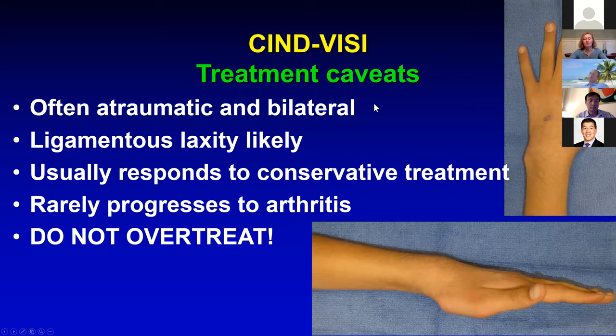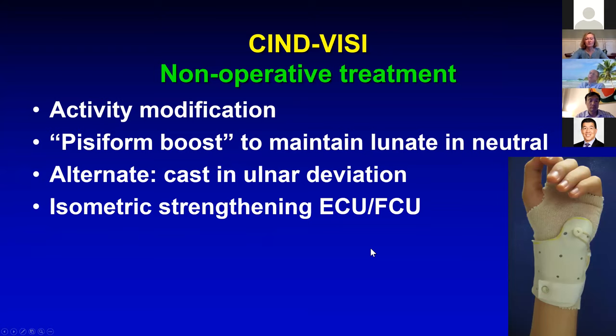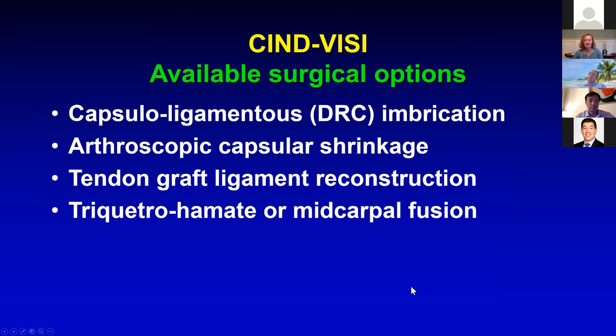Treatment caveats: this is often atraumatic — don't over-treat. Ligamentous laxity is likely. These patients usually respond to conservative treatment and rarely progress to arthritis. Activity modification, the Pisiform Boost splint — therapists love to hate it, patients often throw it away, but it's been described in the literature. Alternatively, cast in ulnar deviation for a short period — sometimes this corrects it acutely in trauma situations. Isometric strengthening has been proposed by Garcia-Elias. Other options include capsuleligament imbrication, tendon grafts, reconstructions, and fusions.